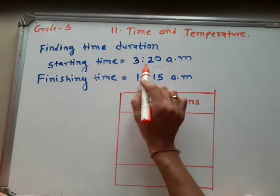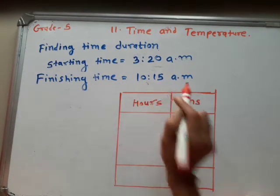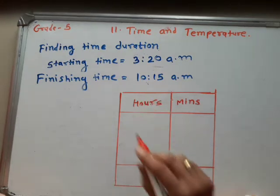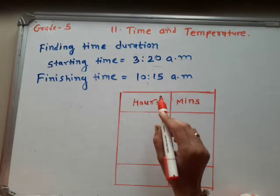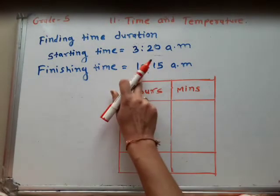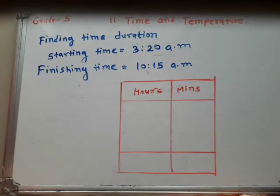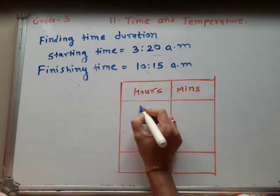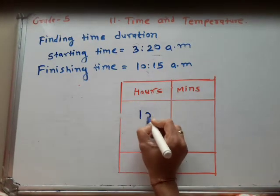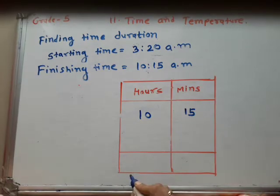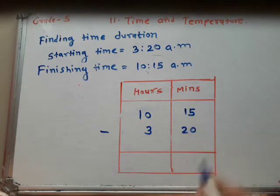First number: starting time is given as 3:20 am and finishing time is 10:15 am. First we arrange the numbers — we subtract the starting time from the finishing time. So we write the finishing time first: 10 hours and 15 minutes. Subtract the starting time: 3 hours, 20 minutes.